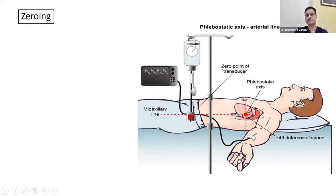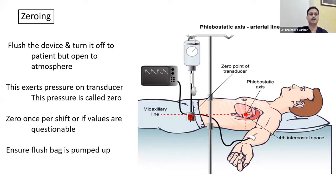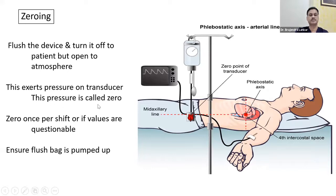Zeroing for arterial lines is equally important, using the same phlebostatic axis principle — fourth intercostal space, mid-axillary line. To zero: flush the device and turn the stopcock off to the patient but open to the atmosphere, neutralizing atmospheric pressure so the monitor reads zero from the atrial level. Every shift we should zero and check the system, ensuring the pressure bag is maintained at around 300 mmHg. One additional important consideration: if we want to know the pressure at the level of the Circle of Willis — relevant in head injury, stroke, or CNS disease — the transducer must be repositioned to that level for zeroing.